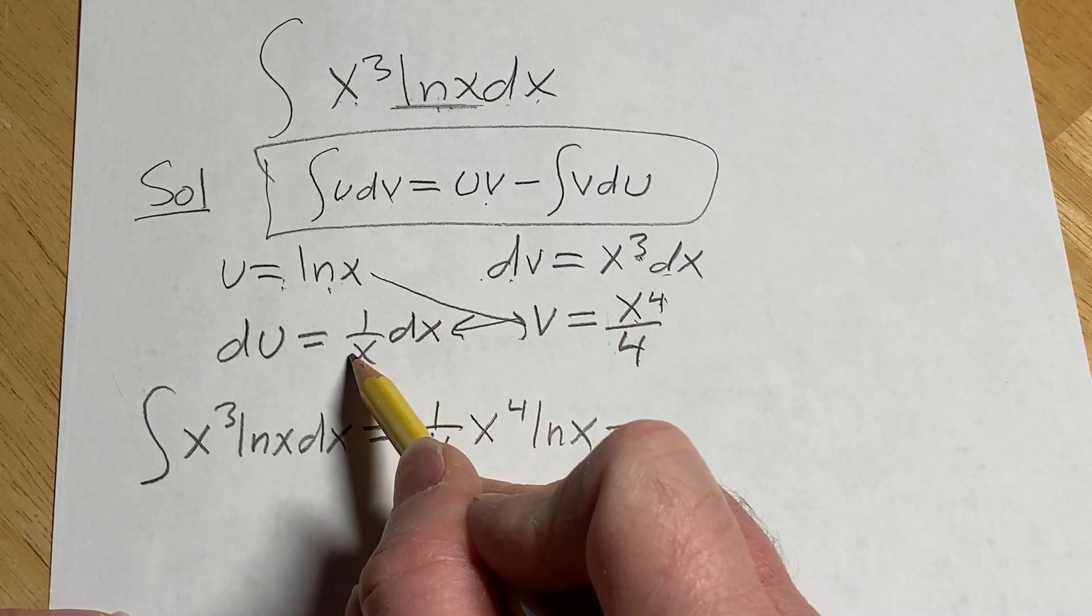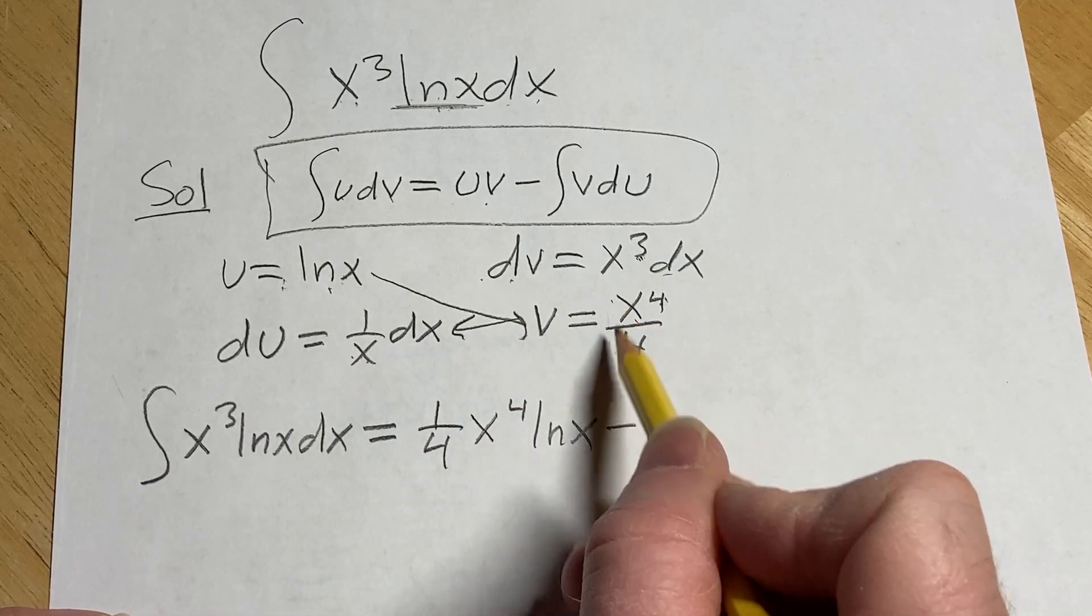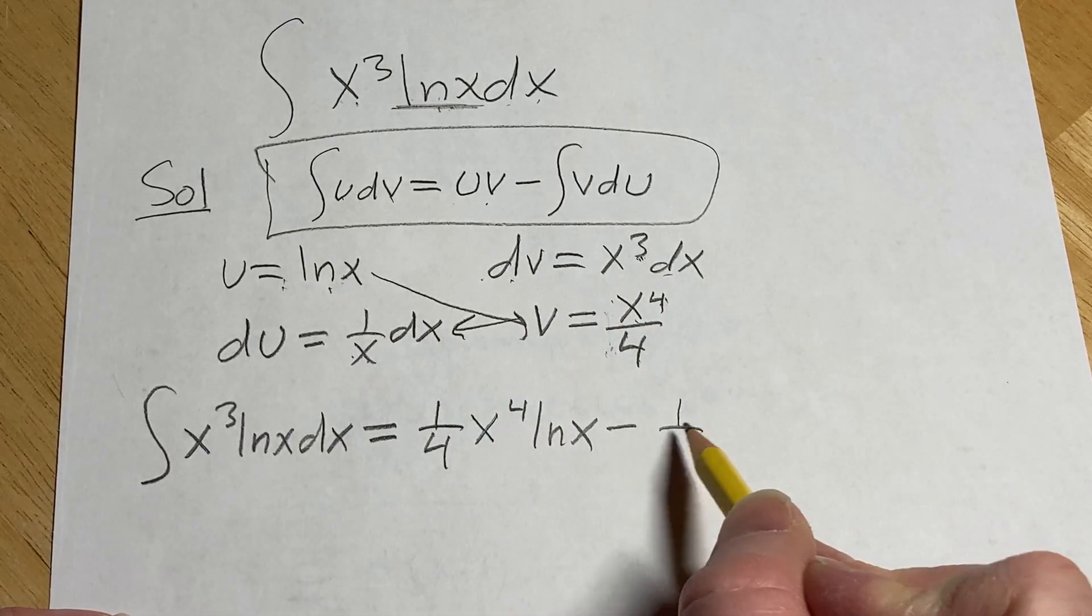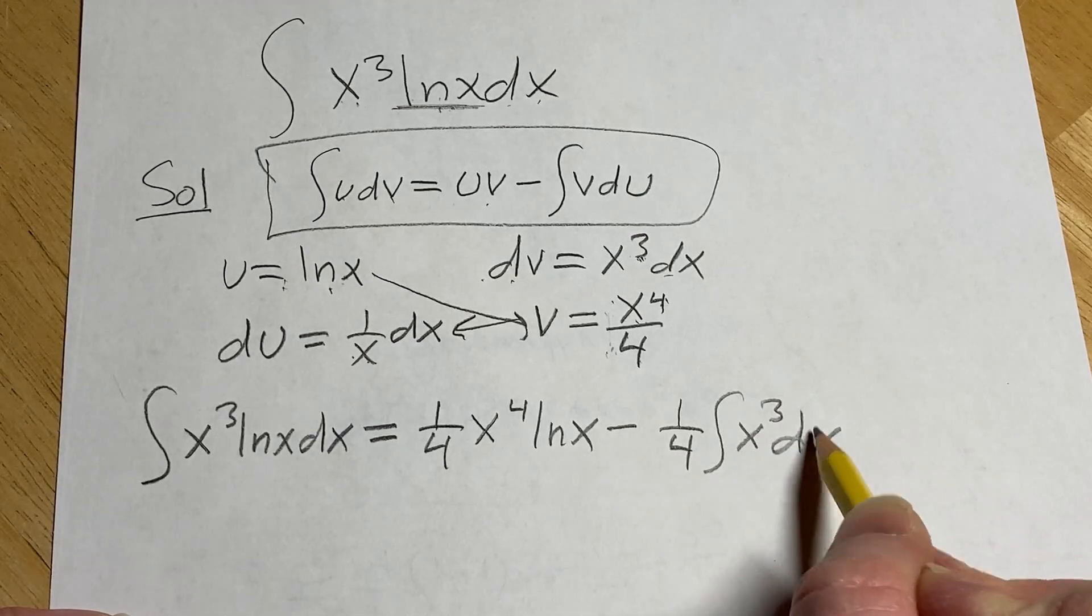We're going to have x to the 4th divided by x so we're going to lose a copy of x so we'll get x cubed. Also we're going to have a 1 4th here so I'll pull that out and we'll have x cubed dx just like that.